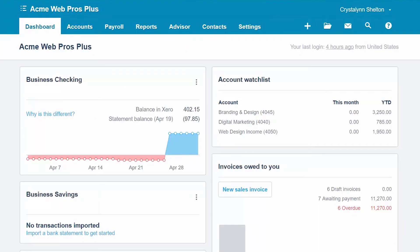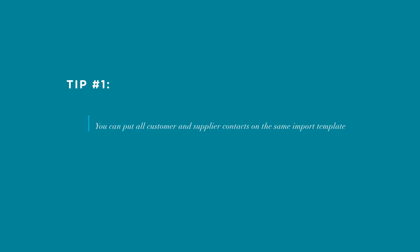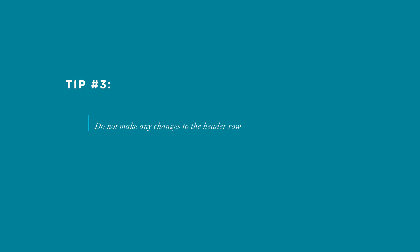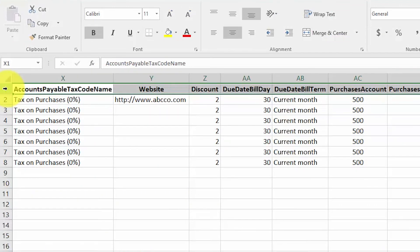Before we proceed to import our customer and supplier contacts, here are some tips. Tip one: you can put all customer and supplier contacts on the same import template — there is no need to create two separate templates. Tip two: you can import up to a thousand supplier and customer contacts at one time. If you have more than a thousand contacts, you can put them in a separate template and import the remaining contacts or enter them manually. Tip three: do not make any changes to the header row. Keep all of the columns even if you do not plan to use them all. The header row refers to the very first row — row one of the template. Do not make any changes to that row and do not delete any of the columns. Tip four: do not change the order of the columns.